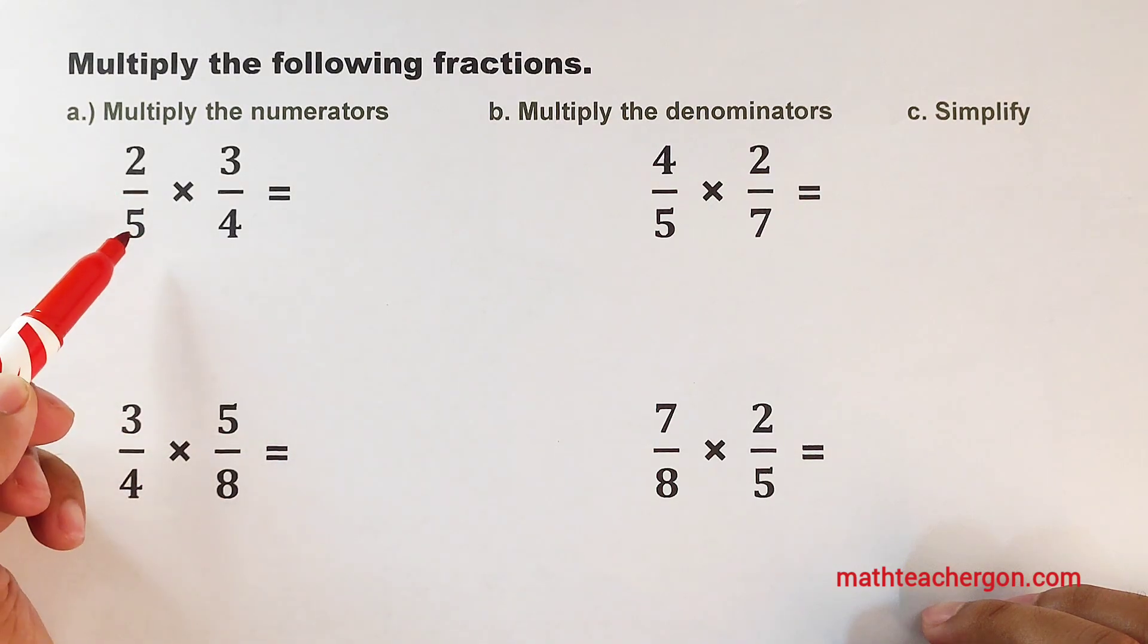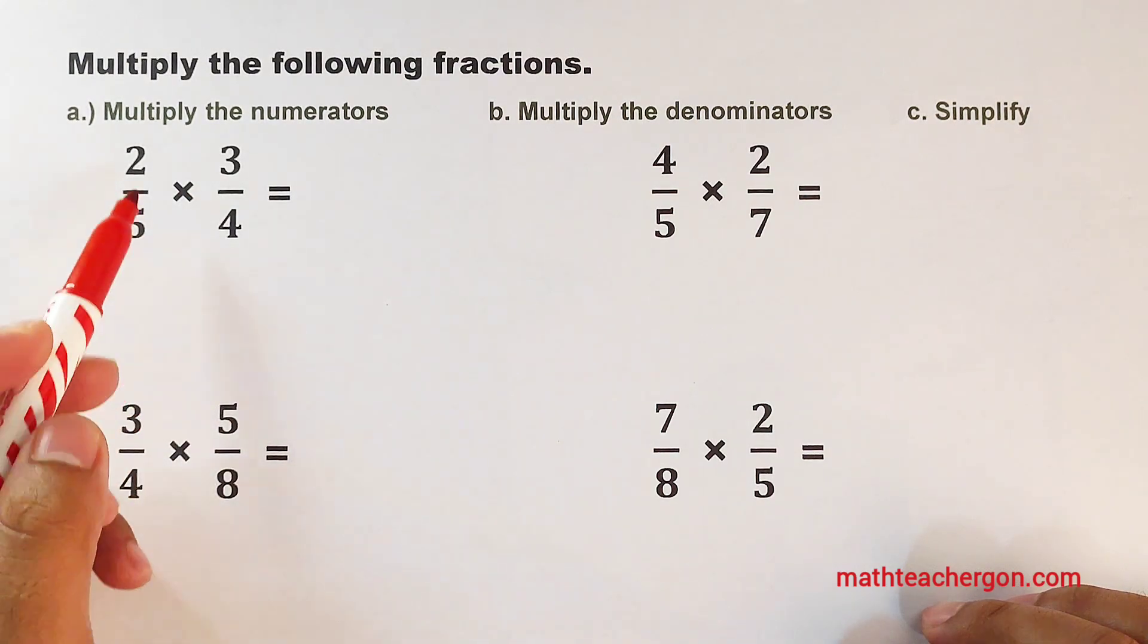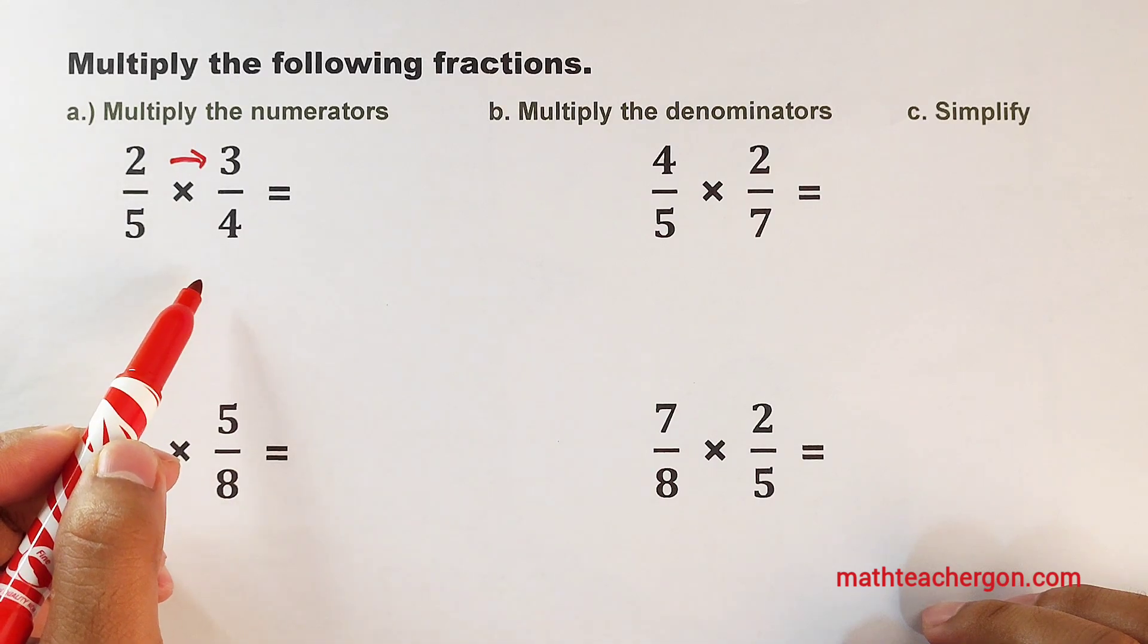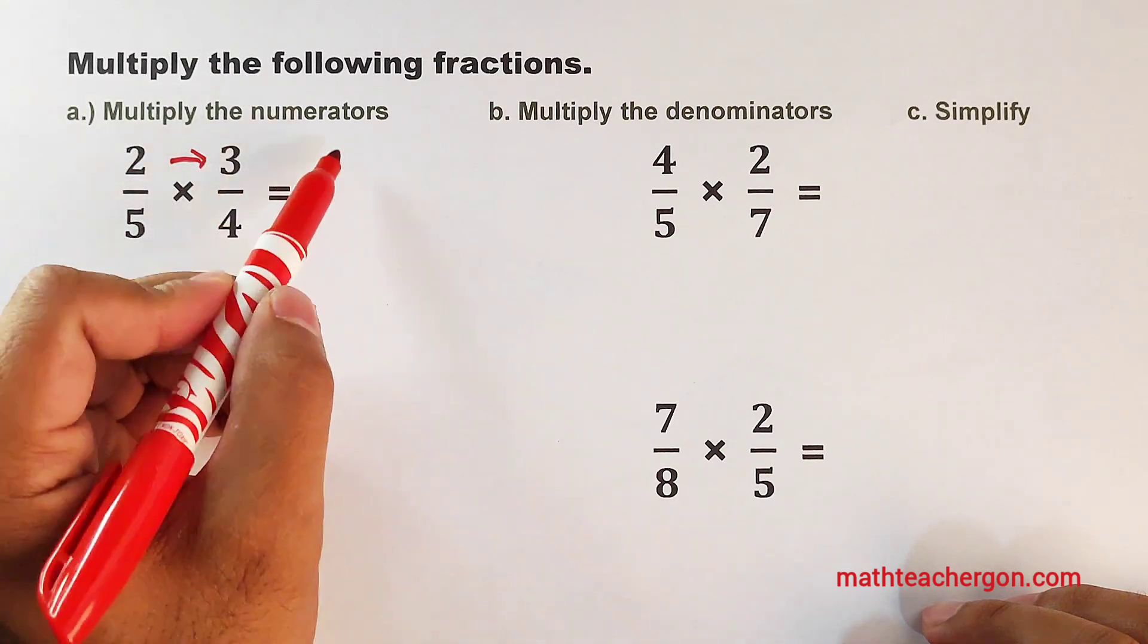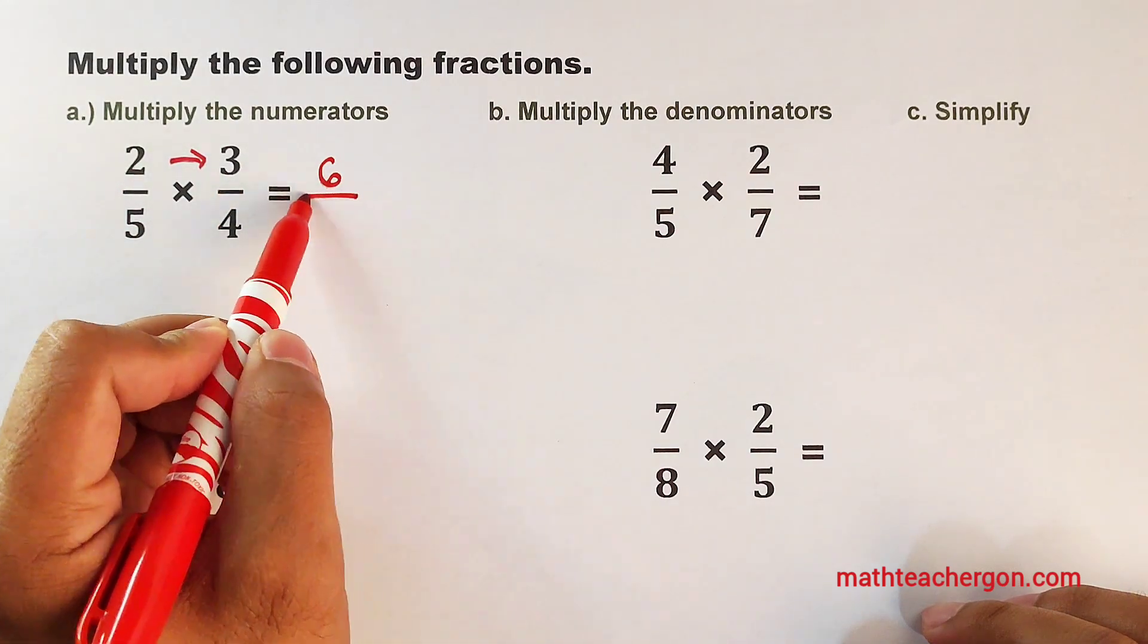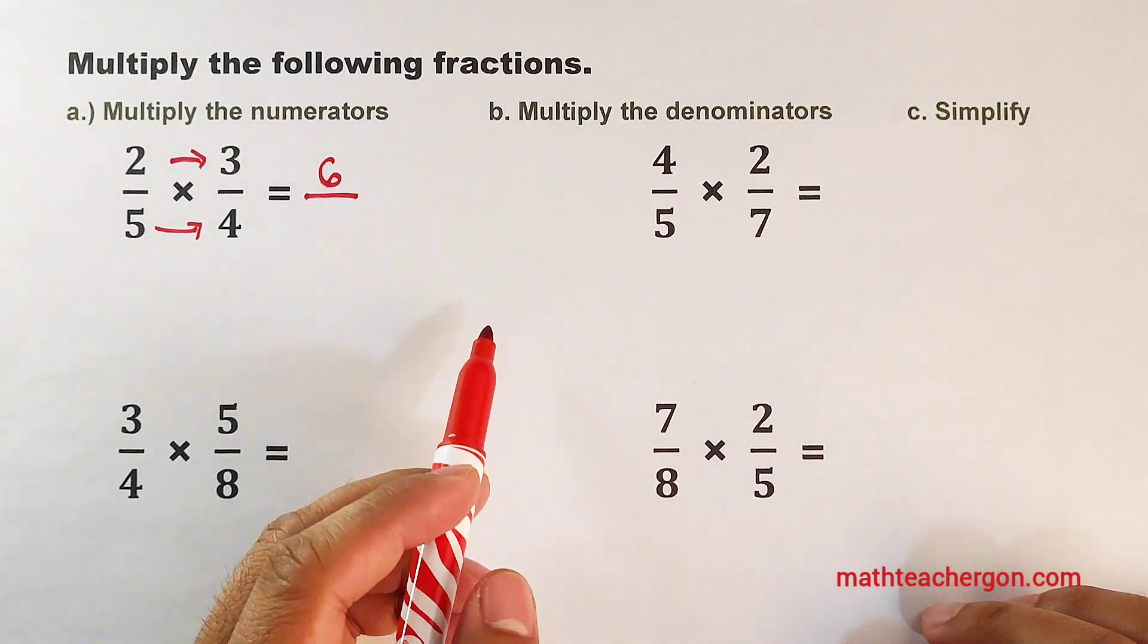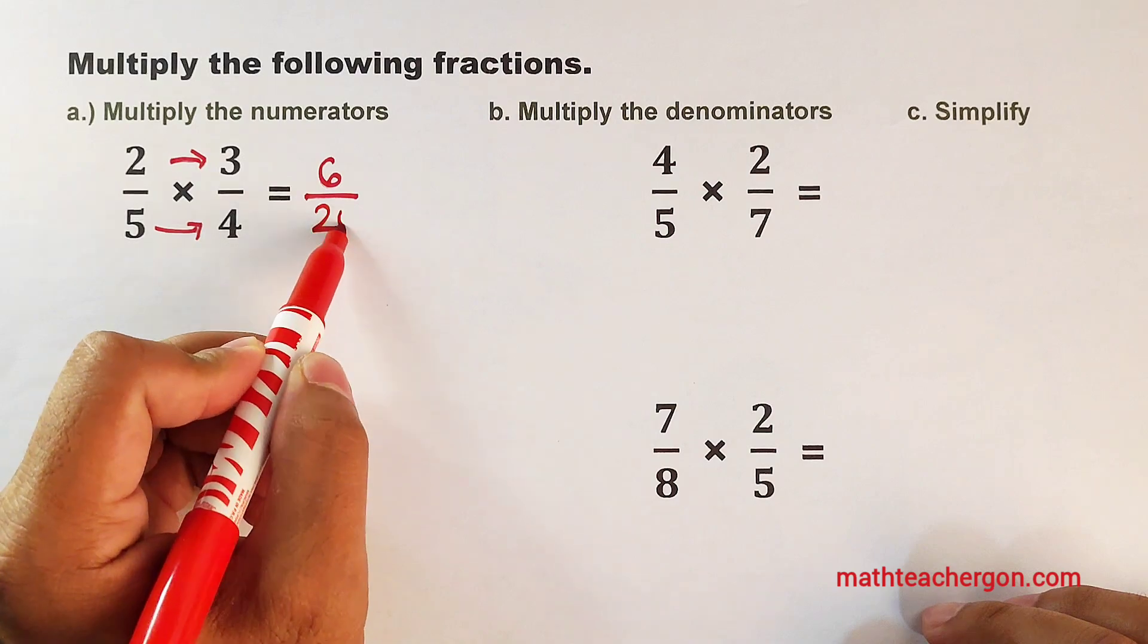Let's start with 2 over 5 times 3 over 4. First step, we need to multiply the numerators. 2 times 3, that would be 6 over 5 times 4, which is multiplying the denominators, that would be 20.